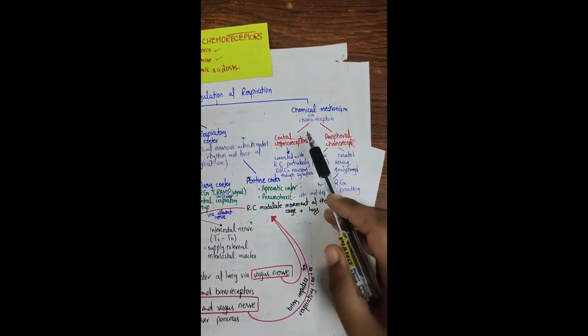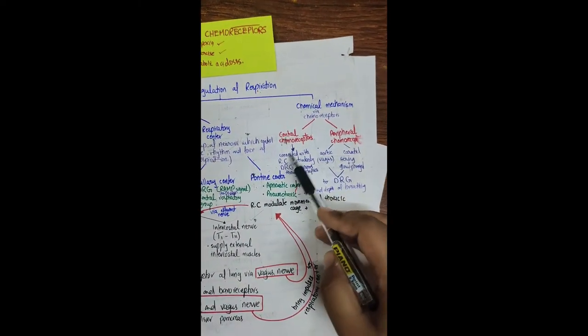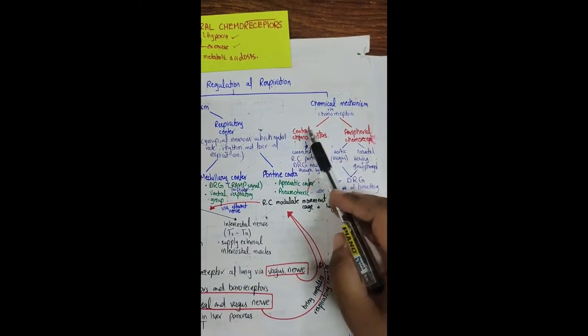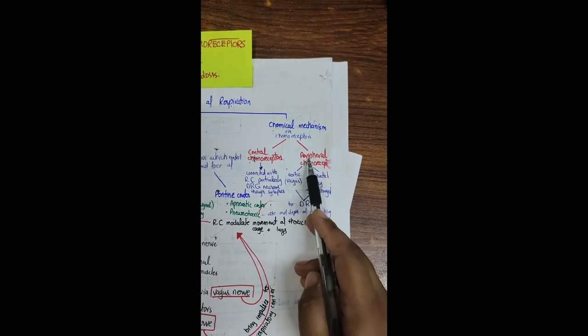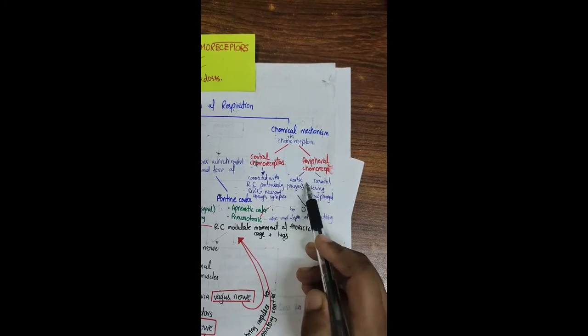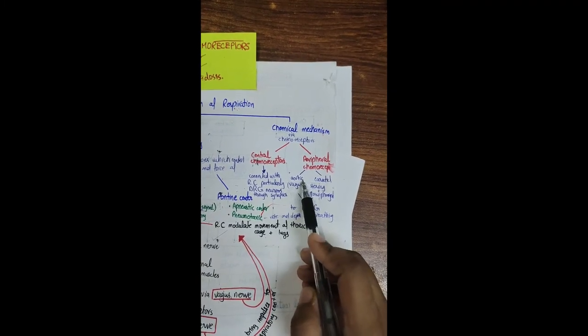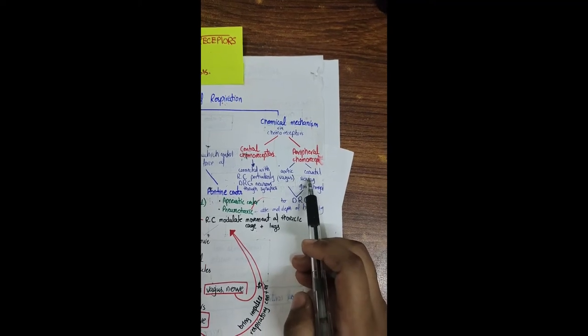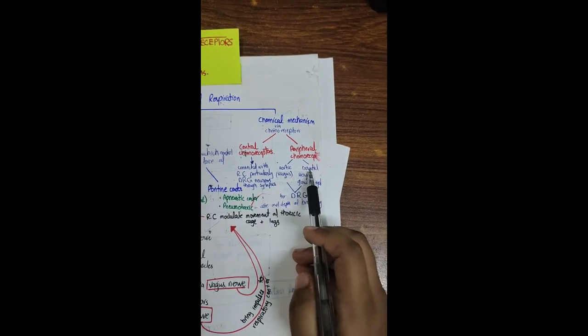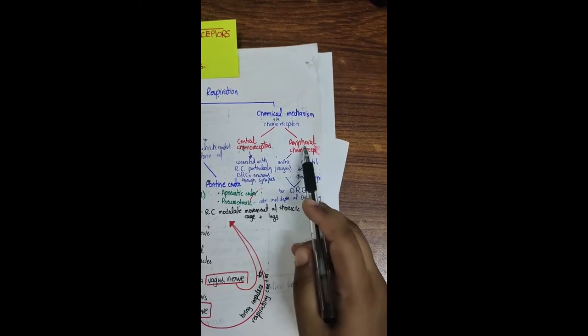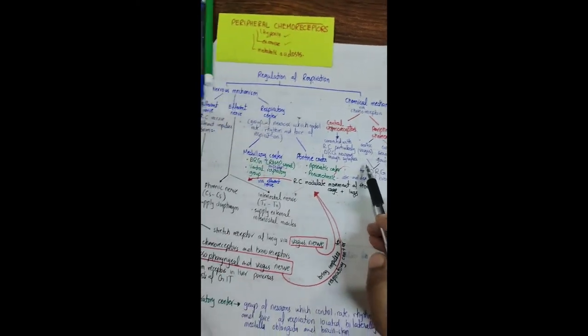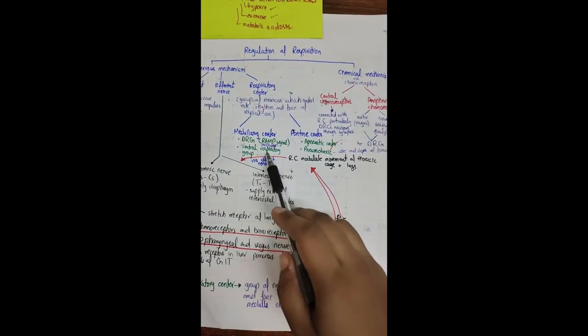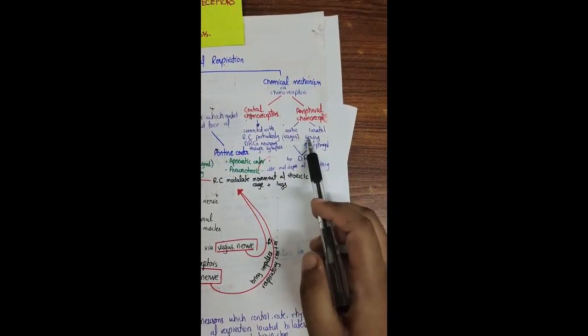In chemical mechanism we have central chemoreceptors and peripheral chemoreceptors. Central chemoreceptors are located centrally. Peripheral chemoreceptors are located peripherally in the aortic arch and carotid body at the bifurcation of carotid artery. In these two places, peripheral chemoreceptors are located. And these peripheral chemoreceptors are connected to this nervous respiratory center through vagus nerve and glossopharyngeal nerve.